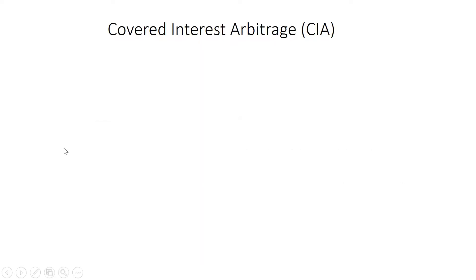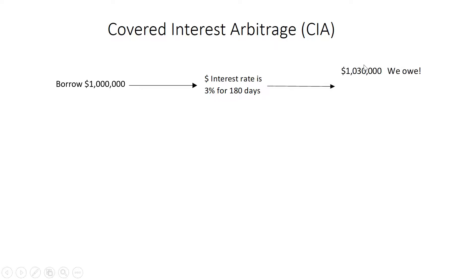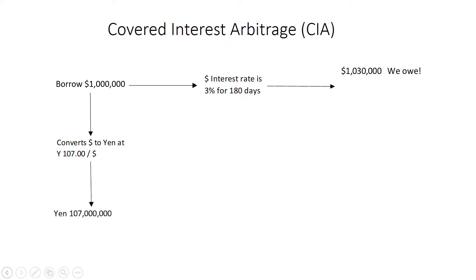So we're going to borrow dollars today, convert those dollars into Japanese yen, invest in yen, and sell yen forward back into dollars. Today, we're going to borrow $1 million. Over time, we're going to have to pay that money back — we're going to borrow it at 3% because that's the U.S. interest rate. So we're going to owe $1,030,000 in six months, 180 days from now. Let's take that $1 million we just borrowed and convert it into yen at the spot rate of 107 yen to the dollar. So that's going to give us 107 million yen.